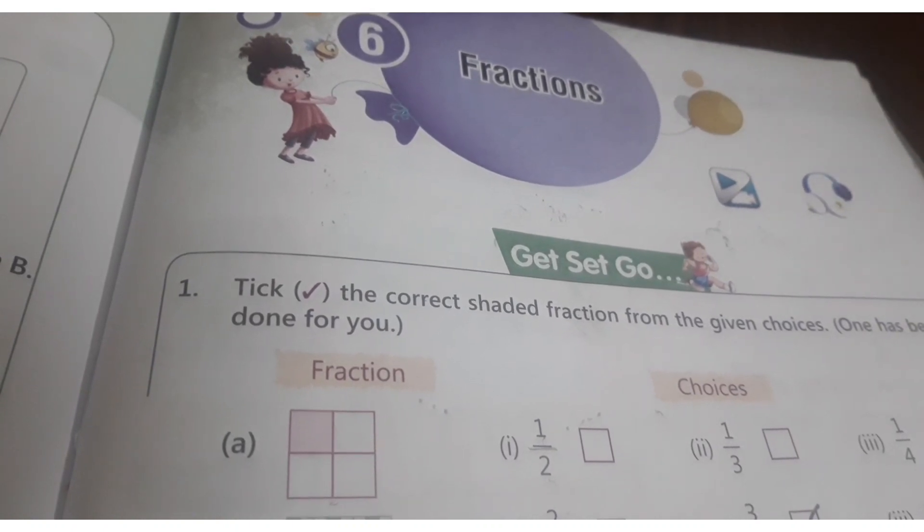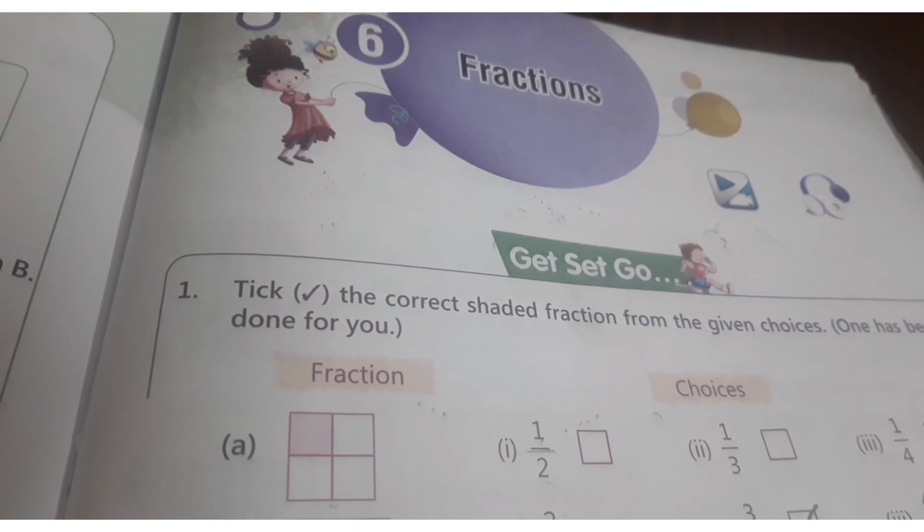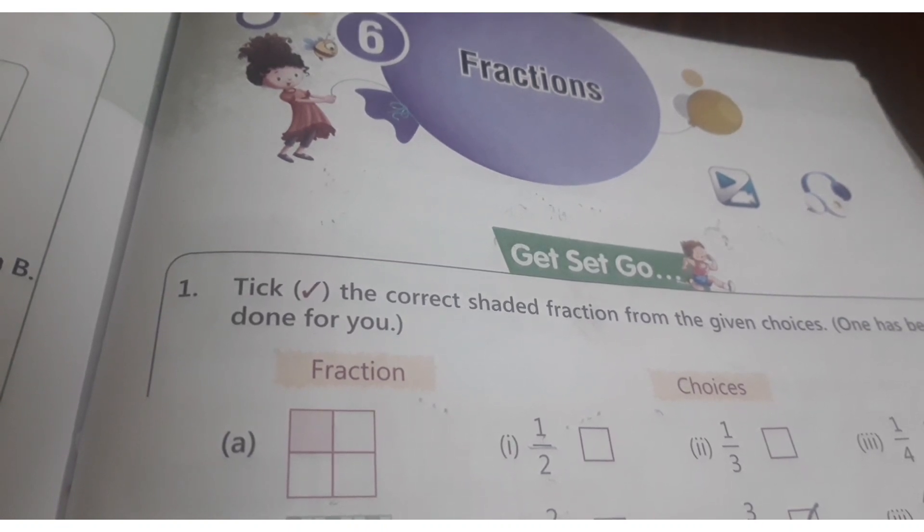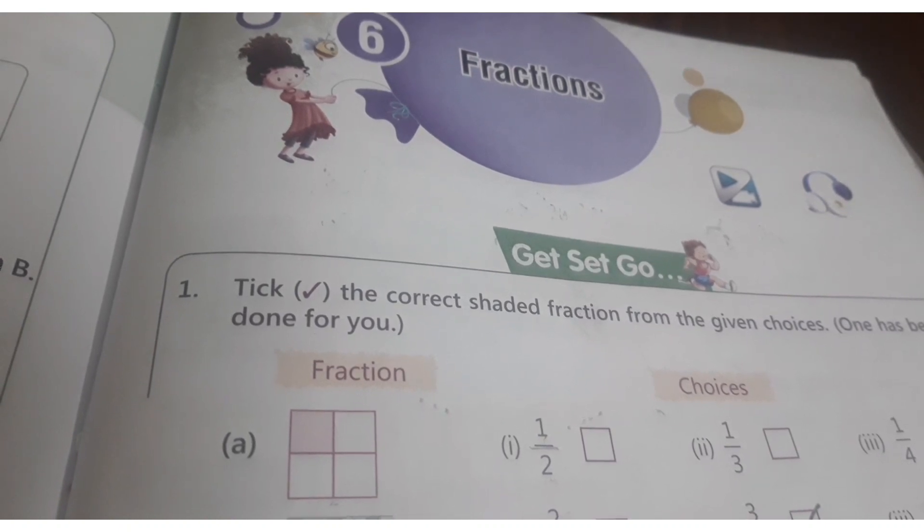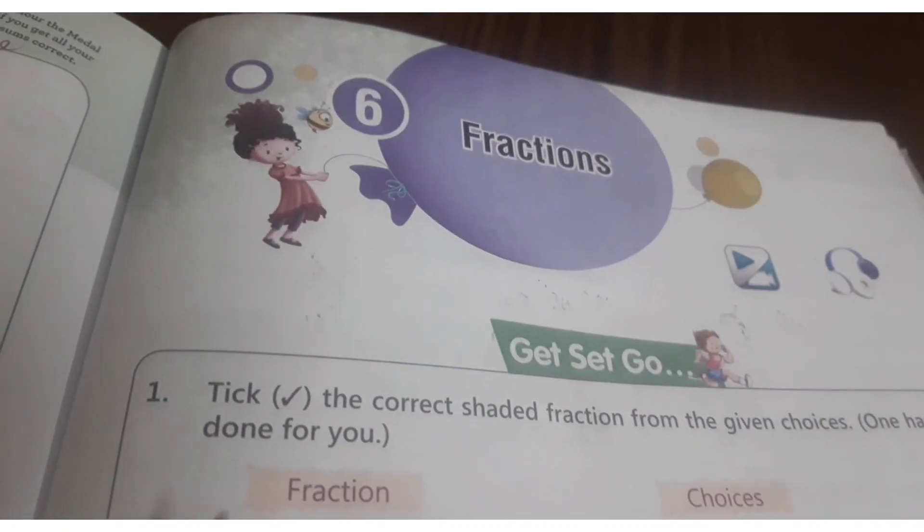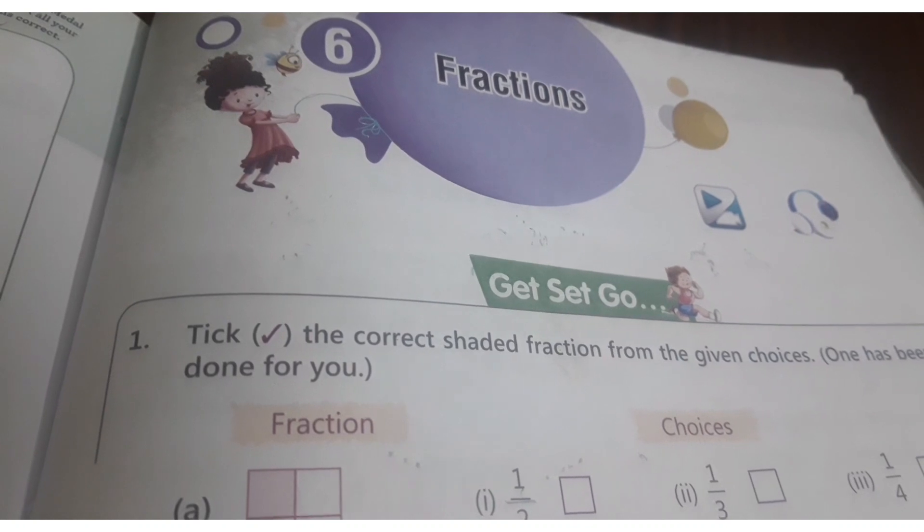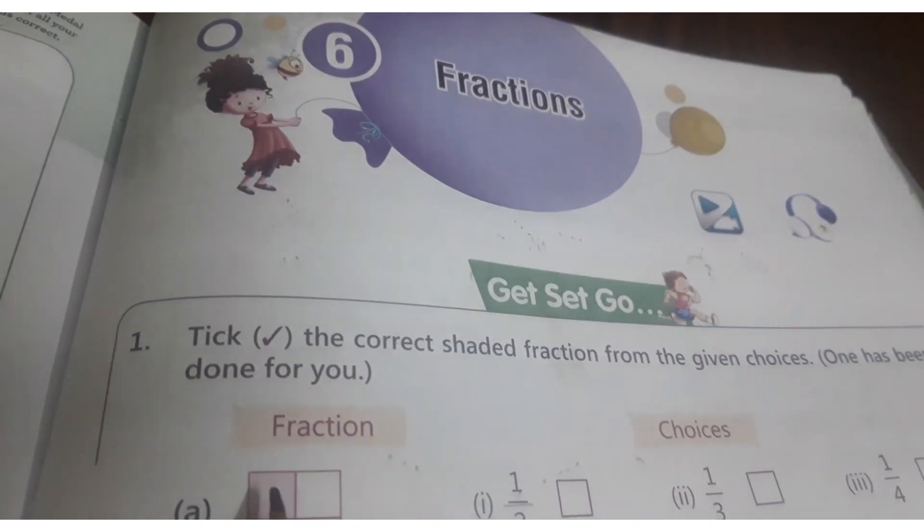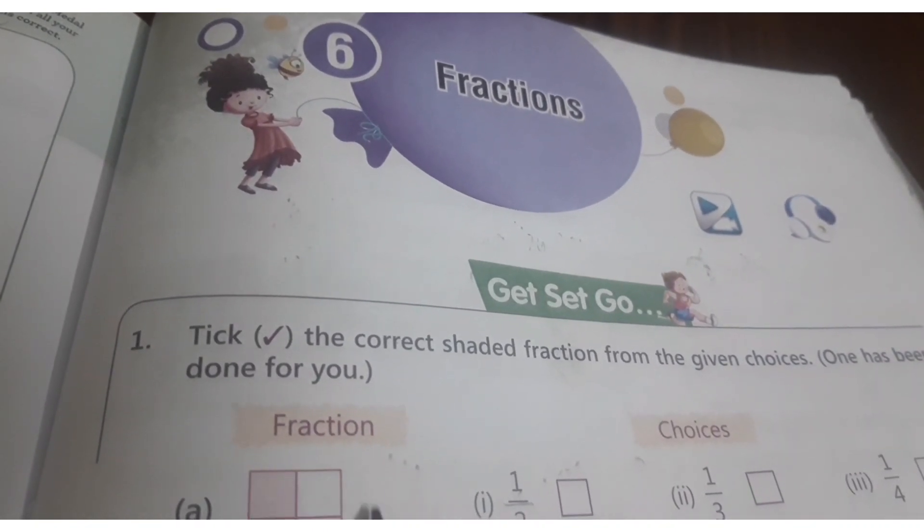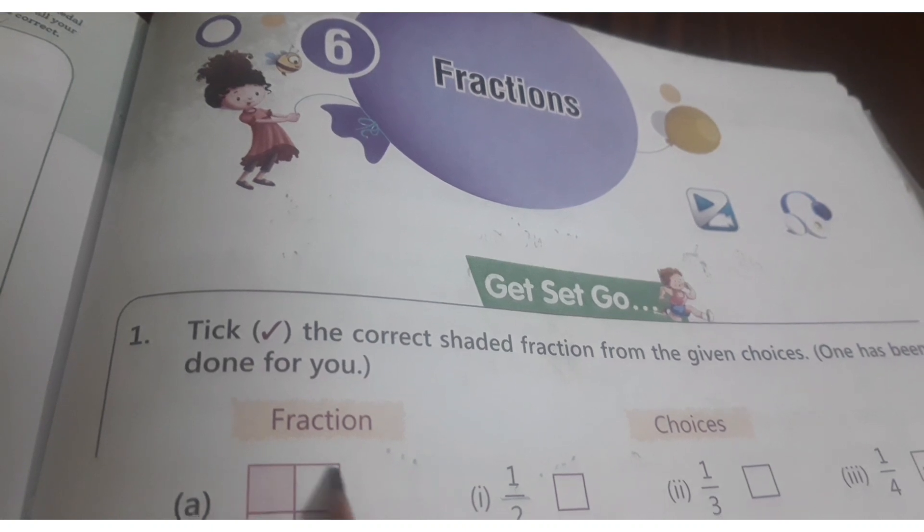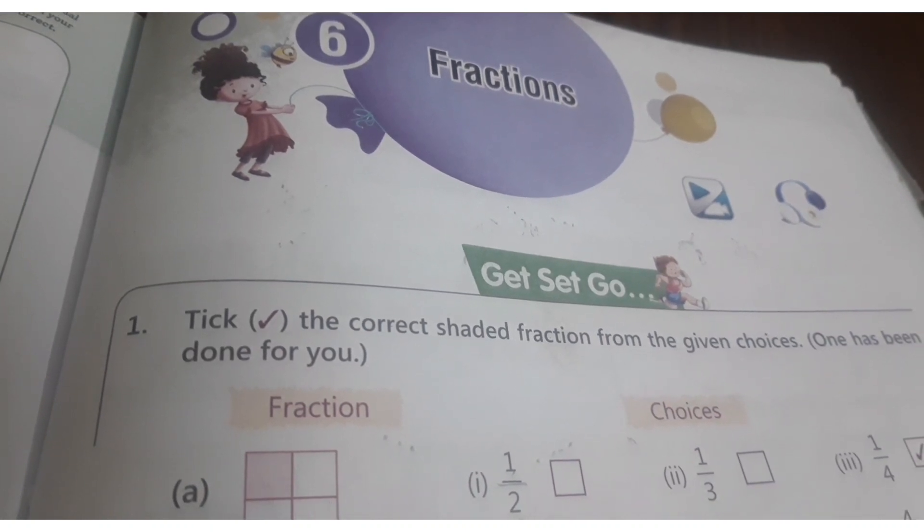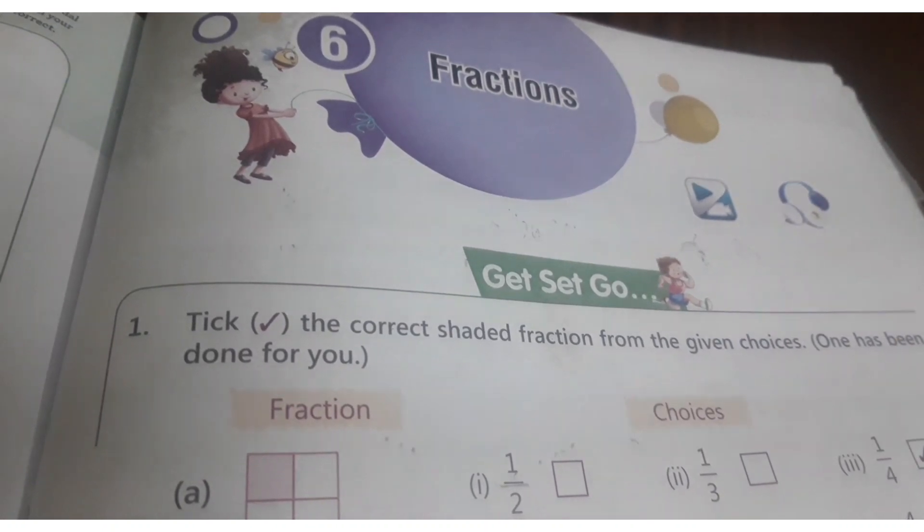And here 1, 2, 3, 4, 5, 6 parts. Two parts are colored pink. Now fraction is a part of the whole. Whole square and a part is the fraction.